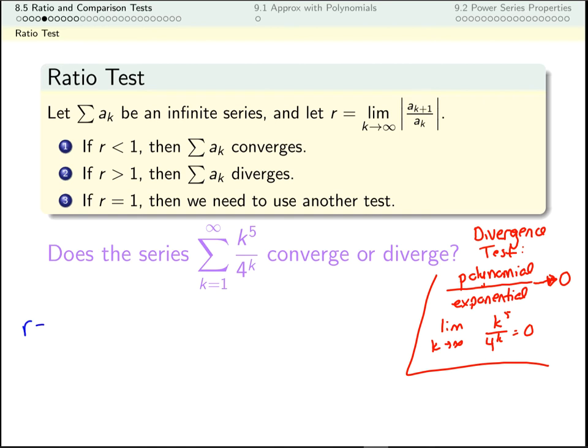Let's figure out r. I don't need the absolute values because I only have positive terms. In the numerator, every k turns into k plus 1. So this k becomes k plus 1. And this k becomes k plus 1 as well. So this is a sub k plus 1. And for the denominator, my k's are just k's. So k to the fifth is k to the fifth. And 4 to the k is 4 to the k. Now we need to evaluate this limit.